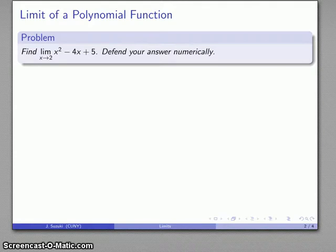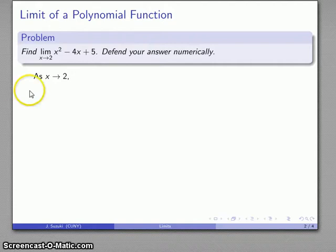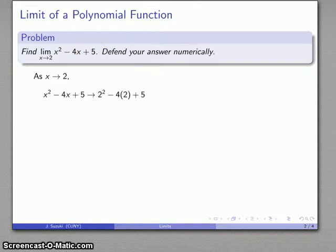The idea behind a limit in this case is finding out what happens as x gets close to 2. As x gets close to 2, x squared gets close to 2 squared, 4x gets close to 4 times 2, and 5 stays close to 5. So as x gets close to 2, this polynomial expression gets close to 2 squared minus 4 times 2 plus 5, which simplifies down to 1.